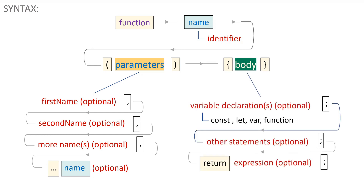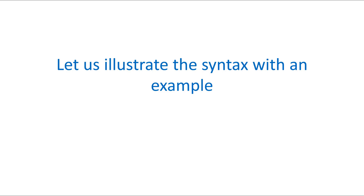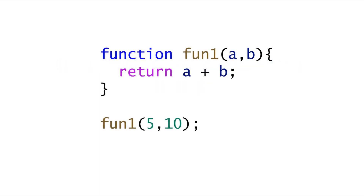All of this is followed by a body. Inside the body we have quite a lot of freedom — we can have variable declarations, other statements, and a return expression. To illustrate this with a simple example: here we have a simple function called fun1 which accepts a couple of parameters a and b. We have a very simple function body containing a return statement in which we add the values of a and b and return them back to the calling location. The calling location is at the very bottom of the code where we have a fun1 invocation with the arguments 5 and 10.